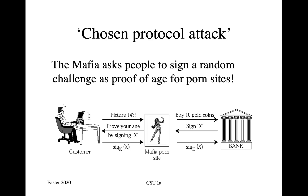Age verification is proposed from time to time for porn sites. There was a proposal in Britain last year that got abandoned when the practicalities were realized to be infeasible. But suppose the mafia had put up such a thing. And the customer wants to see picture 143. And so the mafia then goes to the bank and says, we'd like to buy 10 gold coins, please. And the bank says, fine, that's going to be £7,000, sign X.